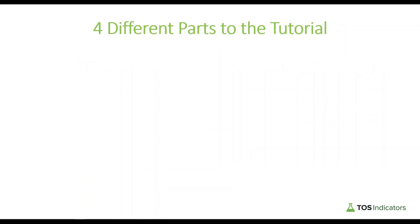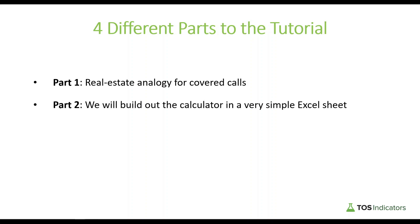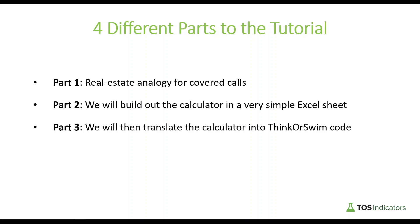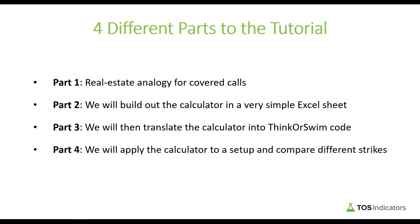There are four different parts to this tutorial. In part one, we'll use a real estate analogy to understand covered calls better and see why even using the lowest volatility stocks, a covered call becomes more appealing compared to real estate and collecting rent. In part two, we'll build out the calculator in Excel. In part three, we'll translate the calculator into ThinkorSwim code. Finally, in part four, we'll apply the calculator to a real setup in KOPN and compare the different strikes to analyze which are most appealing to sell.